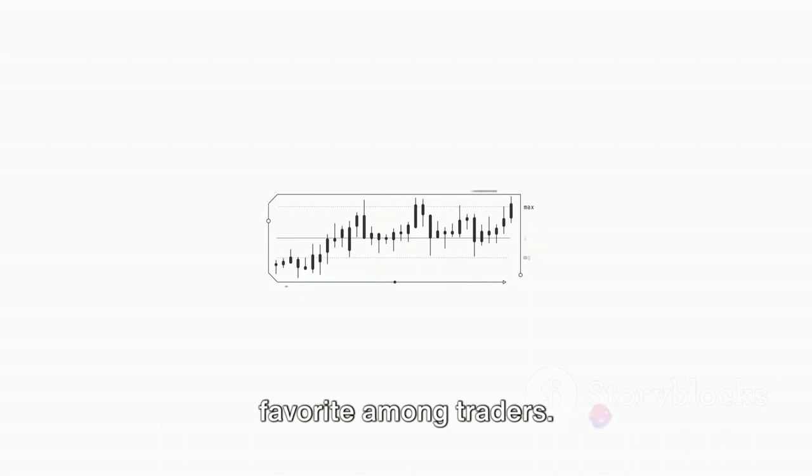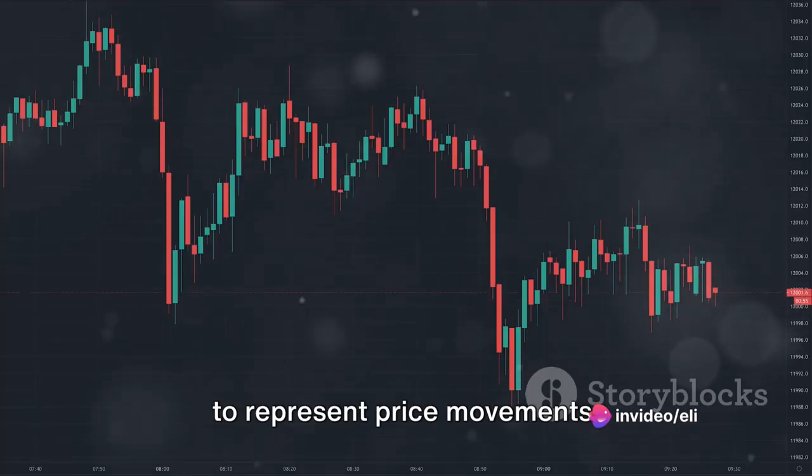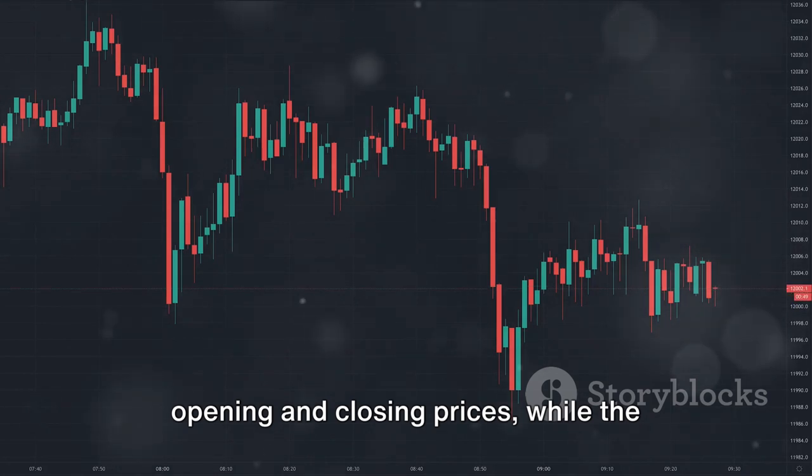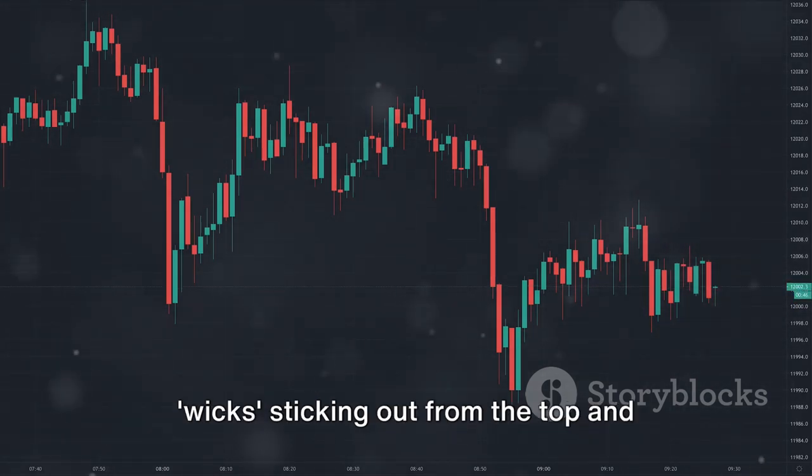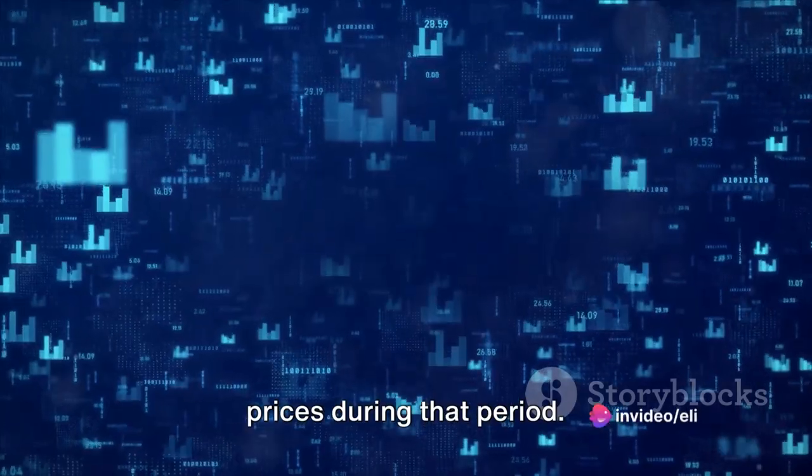Finally, we have the candlestick chart, a favorite among traders. It's similar to the bar chart, but it uses a series of rectangles or candles to represent price movements. The main body of the candle shows the opening and closing prices, while the wicks, sticking out from the top and bottom, represent the highest and lowest prices during that period.